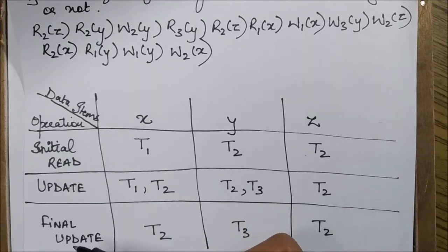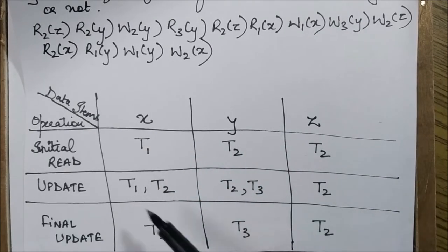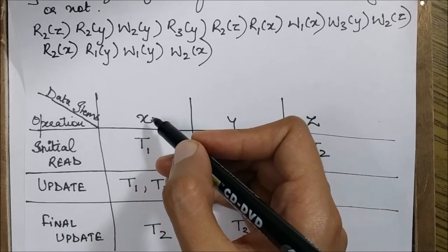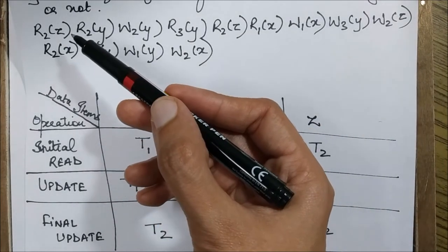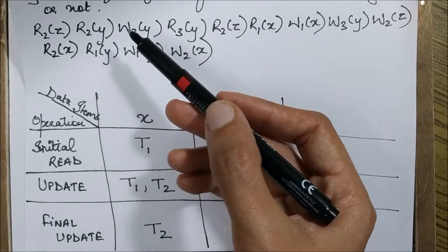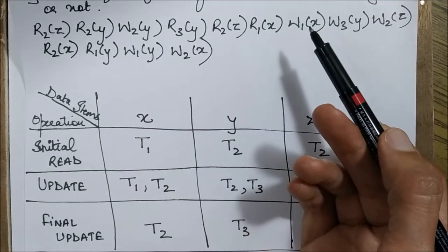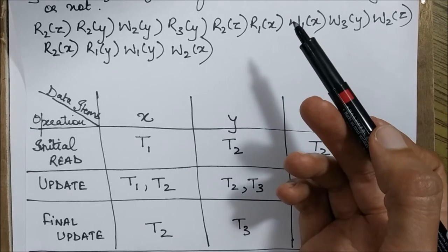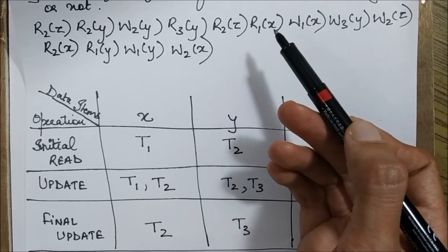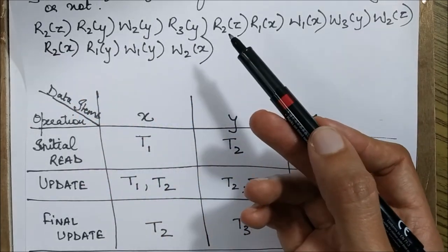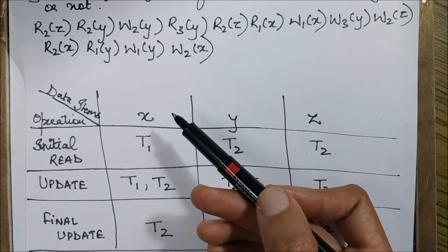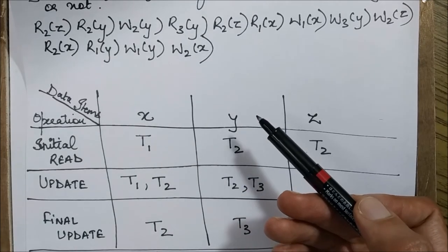This is the schedule and I'm going to check for these three conditions: initial read, update, and final update. We have three data items x, y, z. For data item x, we start and try to find a write operation. Any read operation before this write will be an initial read. There is an initial read with T1, and there is no other read operation before this, so only T1 performs the initial read on data item x.